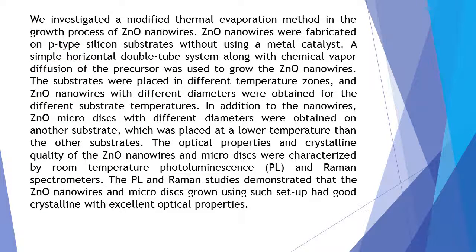We investigated a modified thermal evaporation method in the growth process of SnO₂ nanowires. SnO₂ nanowires were fabricated on P-type silicon substrates without using a metal catalyst. A simple horizontal double-tube system along with chemical vapor diffusion of the precursor was used to grow the SnO₂ nanowires.